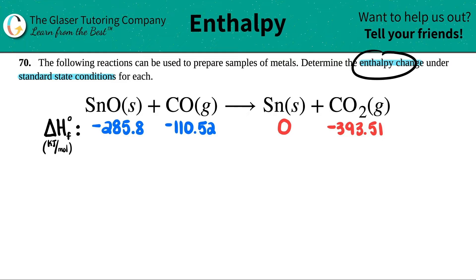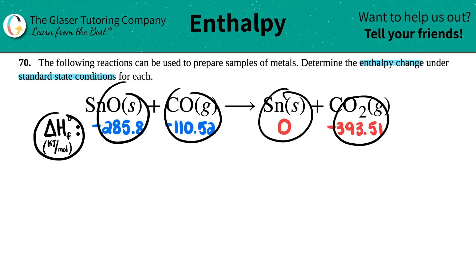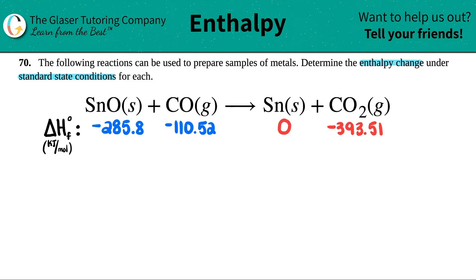So we're looking for the enthalpy change — enthalpy is delta H. If they say they want it under standard conditions, that means we need to find the numbers in the tables. There should be an appendix in the back of your textbook that gives the delta H values for each component. I went into appendix G in the textbook I'm using and wrote down the numbers. Now we just have to find the enthalpy change for the whole reaction.